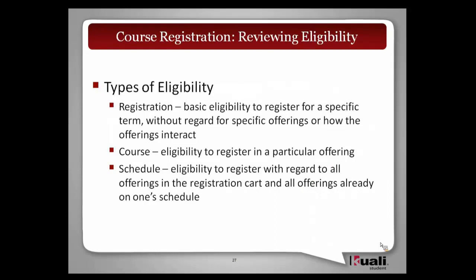Bob introduced a little bit about eligibility, so let's talk in more detail. We're looking at three different types or categories of eligibility. The first is registration eligibility — that's the basic eligibility to register for a specific term, not regarding any specific offerings. There's course eligibility, which is eligibility to register in a particular offering. And there's schedule eligibility, which is eligibility to register with regard to the offerings in the registration cart and all offerings already on your schedule.